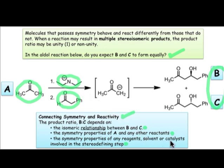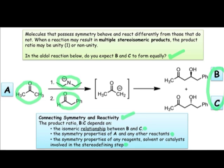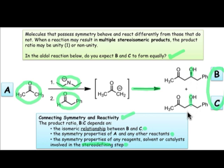The solvent and the catalyst also need to be considered. Any chemical species involved in what's known as the stereodefining step must be taken into consideration. For this reaction, the stereodefining step comes after enolate formation. The stereodefining step is the step in which the newly established stereocenter is created — that would be the addition step for this Aldol reaction.